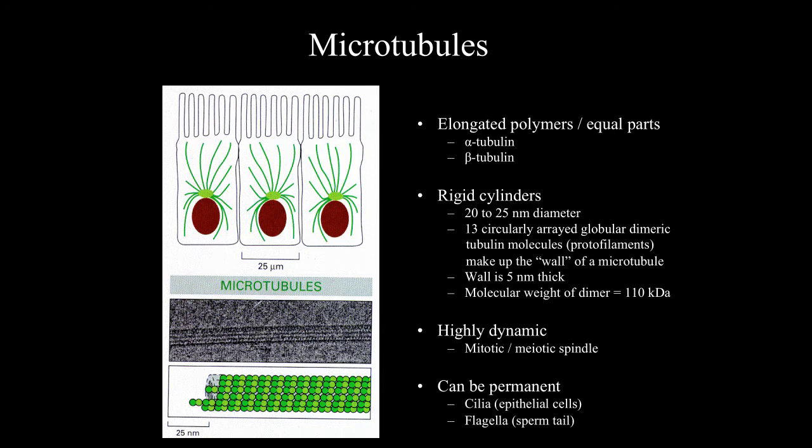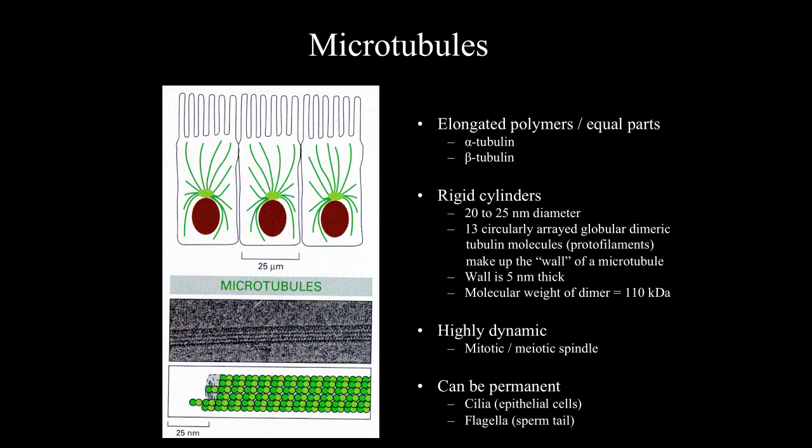Microtubules are highly dynamic structures — you only need to think about the mitotic spindle to appreciate that. However, microtubules can be permanent, as seen in the structure of cilia and flagella, where the axoneme is essentially composed of permanent microtubules.